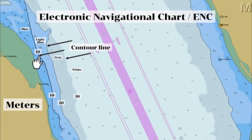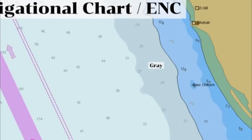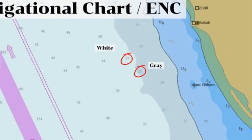Let us go to the other side of the traffic lane. Here in the gray shaded area, the spot sounding is 27 meters, and on the white is 31 meters. It means that this contour line is showing an equal depth of 30 meters.